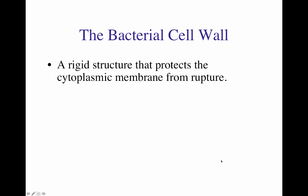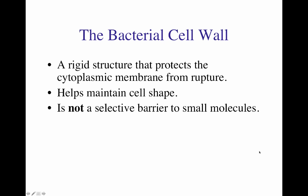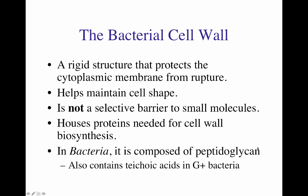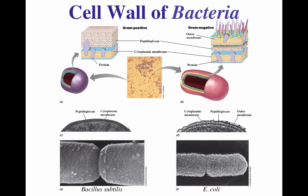The bacterial cell wall is one of the most studied structures in bacteria. It is a rigid structure that protects the cytoplasmic membrane from rupture and helps maintain cellular shape. It is not a selective barrier to small molecules — that is still the major function of the cell membrane. The cell wall houses many proteins needed for cell wall biosynthesis, and in bacteria it is composed mainly of peptidoglycan. In gram-positive bacteria, it also contains teichoic acids.